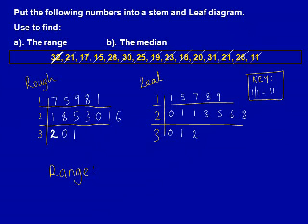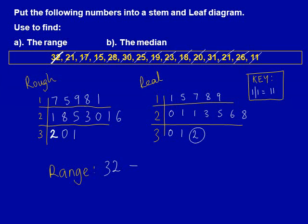We now have three marks. In order to get the fourth mark, we need to find the range. The range is the biggest number take away the smallest number. We can use our stem and leaf diagram to find the biggest number — it's the last number on the diagram. Here, it's represented by the 2, which we've circled, and that number is 32. We now want the smallest number, which is the first number. We've circled the 1, and that represents 11. So we need to do 32 minus 11, and the answer is 21.